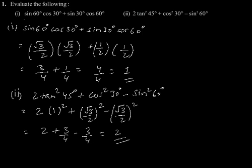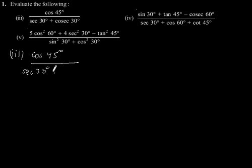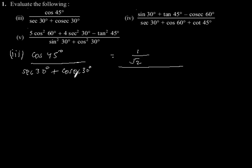Now the third part: evaluate cos 45° divided by (sec 30° + cosec 30°). Putting in the values: cos 45° is 1/√2 divided by — sec 30° and cosec 30° values to be substituted.